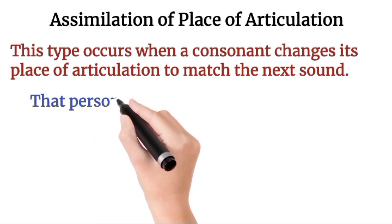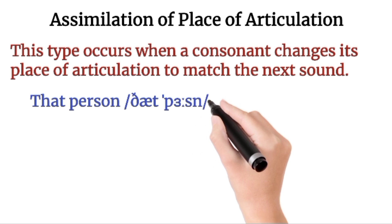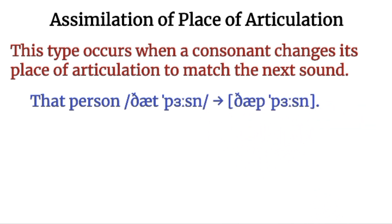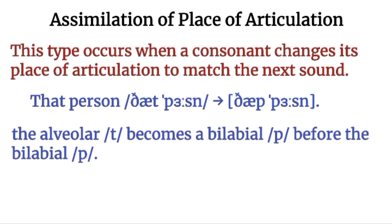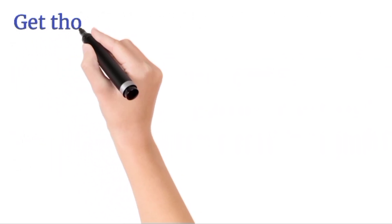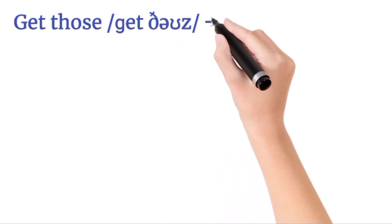Assimilation of place of articulation occurs when a consonant changes its place of articulation to match the next sound. For example, 'that person' — in rapid speech we say 'thap person.' Here the T is affected by the next P sound, so the alveolar T becomes bilabial, matching the bilabial P. This is the first example of place assimilation.